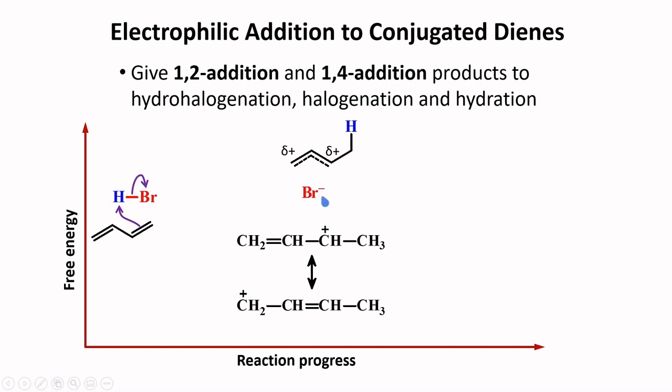The bromine ion may attack either at carbon 1 or carbon 4. If the bromine ion attacks at carbon 4, you will get a 1,4-addition product, because the hydrogen is attached at position 1 and bromine is attached at position 4.